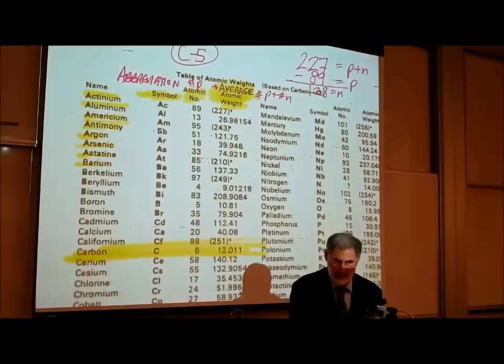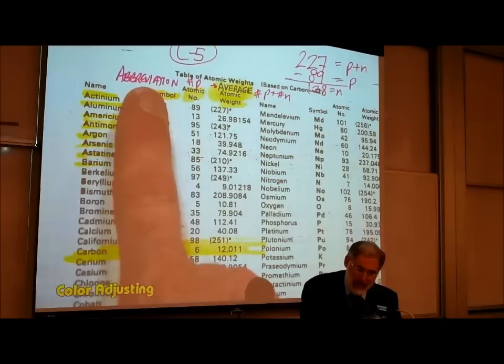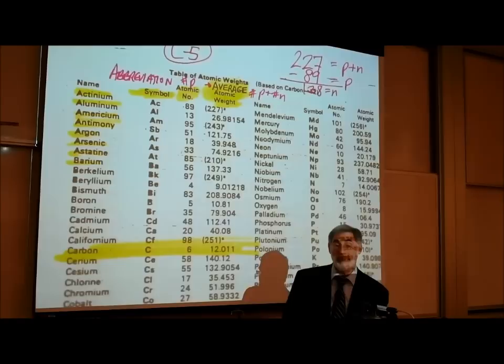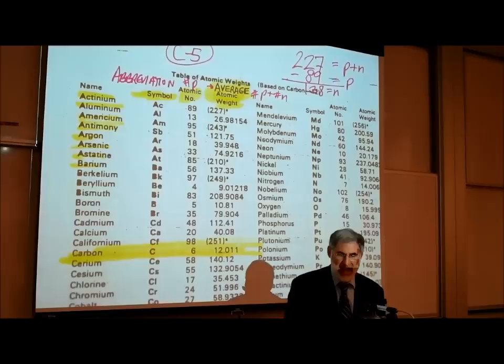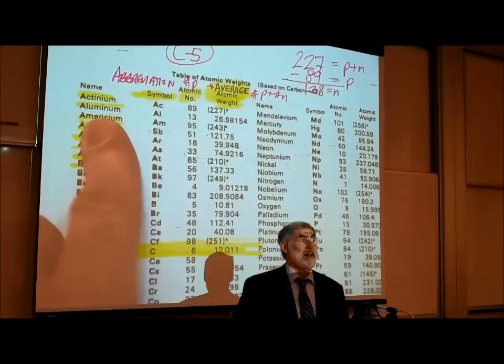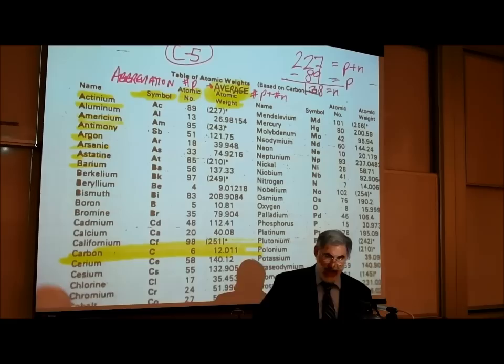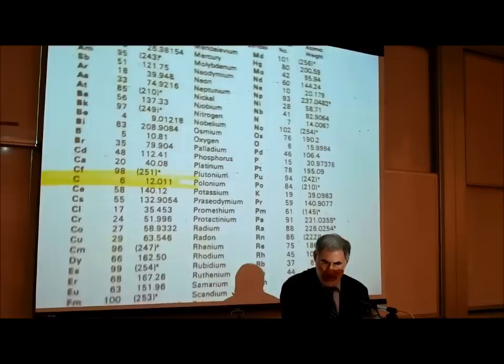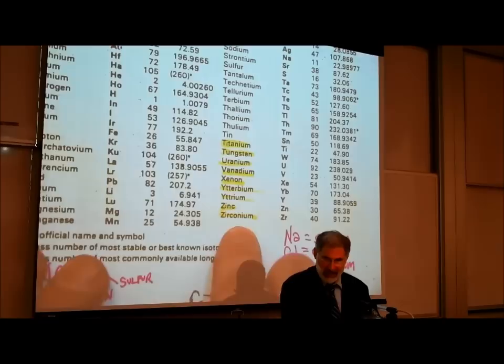Page C5 is an alphabetical listing of all the elements we know of that make up all the matter in the universe. They are listed alphabetically from A to Z. The very first one is actinium, and the second one is aluminum. The very last element listed alphabetically is zirconium.